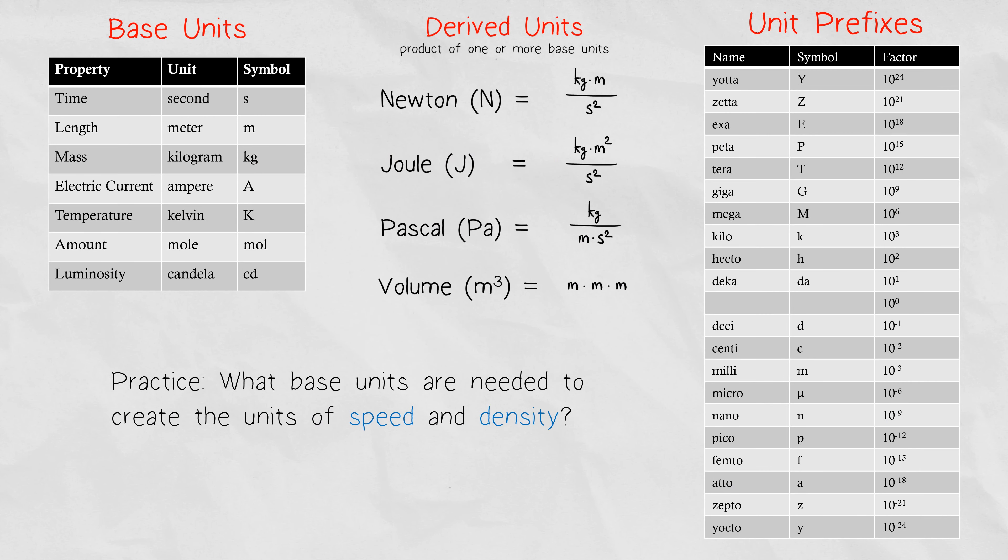This video should give you a better understanding of the SI system of units. It is composed of seven base units that assign a unit for seven different properties we observe in physical sciences. We combine those units to create more complex units called derived units, and we can also use prefixes to indicate the scale of the measure, relative to its base SI unit.